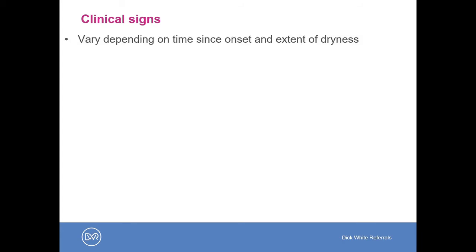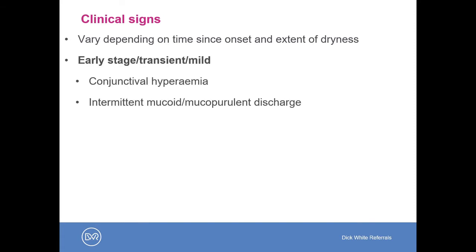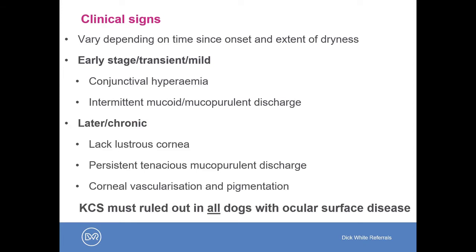The clinical signs of dry eye vary depending on several factors, particularly time since onset of the problem and the extent of the dryness itself. Common early signs — which may also be associated with transient or mild dry eye — are reddening of the ocular surface (conjunctival hyperemia) and an intermittent mucoid to mucopurulent discharge, particularly if there is a secondary bacterial infection. More chronic signs include a lacklustrous cornea and persistent, tenacious mucopurulent discharge.